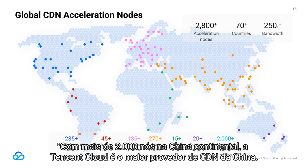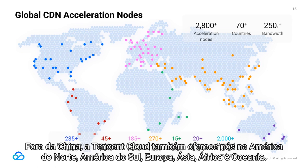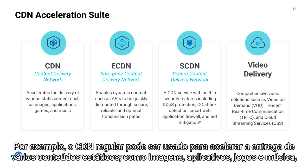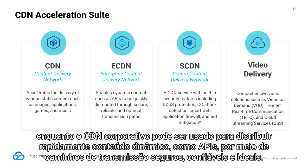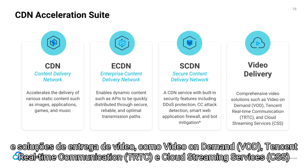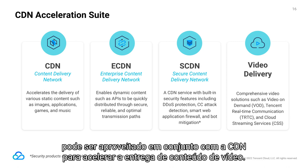With over 2,000 nodes in mainland China, Tencent Cloud is the largest CDN provider in China, and also offers nodes in North America, South America, Europe, Asia, Africa, and Oceania. Customers can choose from different CDN features: regular CDN for accelerating static content such as images, applications, games, and music; enterprise CDN for dynamic content such as APIs through secure and optimal transmission paths; secure CDN to protect against DDoS, CC, web, and bot attacks; and video delivery solutions such as Video On Demand, Tencent Real-Time Communication, and Cloud Streaming Services.